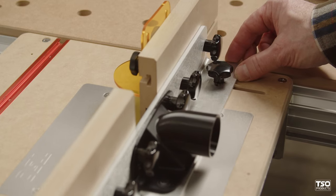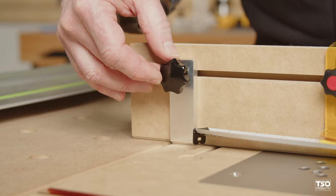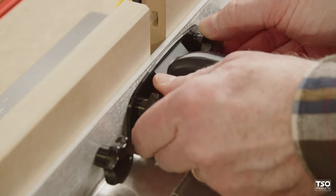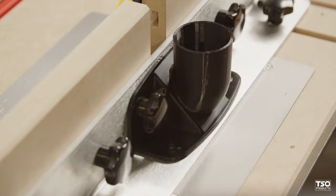The fully adjustable fence assembly includes a bit guard, two stops, and a one and a half inch dust port which mounts in the horizontal or vertical position.